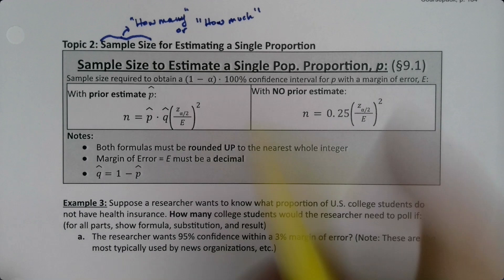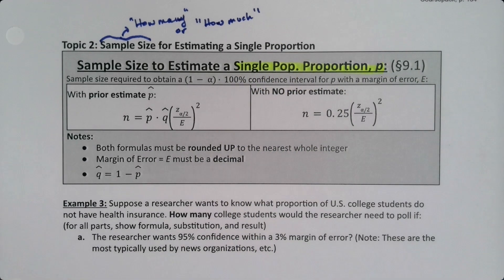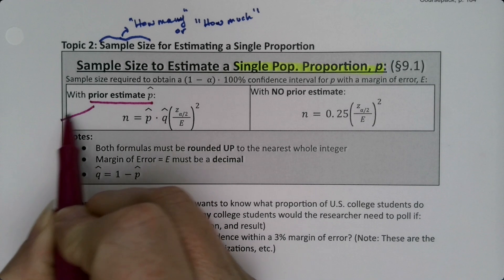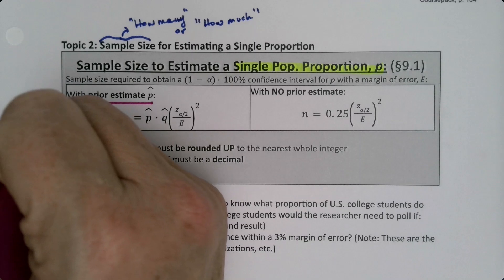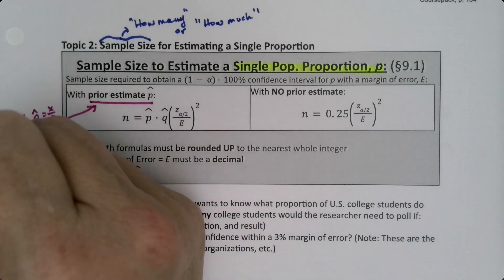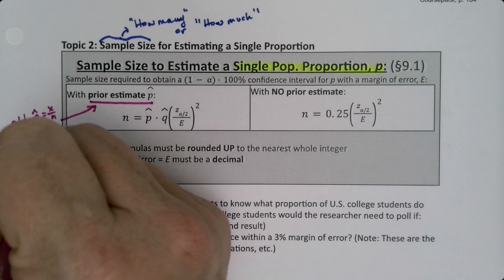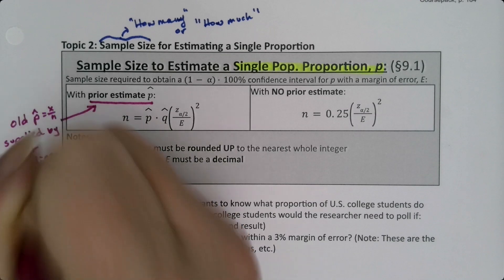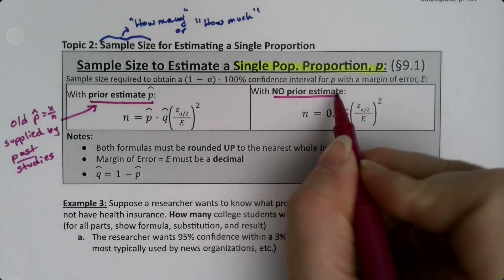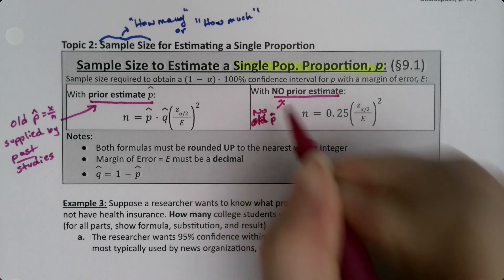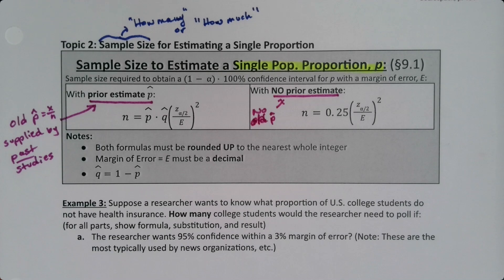For these two formulas we're talking about a single proportion — if we want to estimate a proportion p, how many people or things do we need to survey. The answer depends on a few things: whether or not we have a prior estimate. Do we have some old p-hat, which is x over n, supplied by past studies? Or do we have no prior estimate — no old p-hat to use?